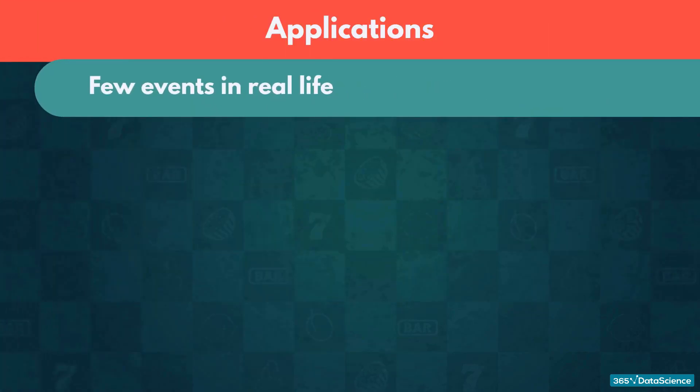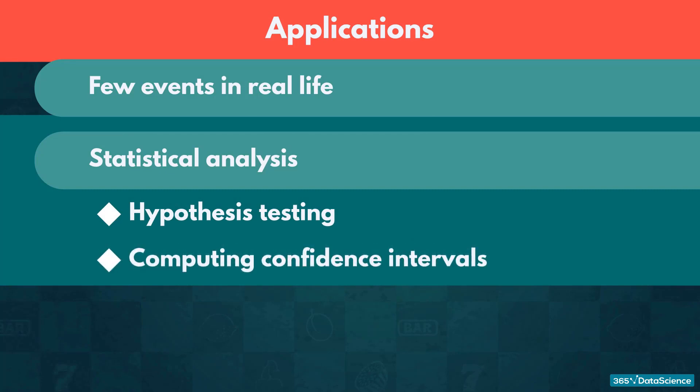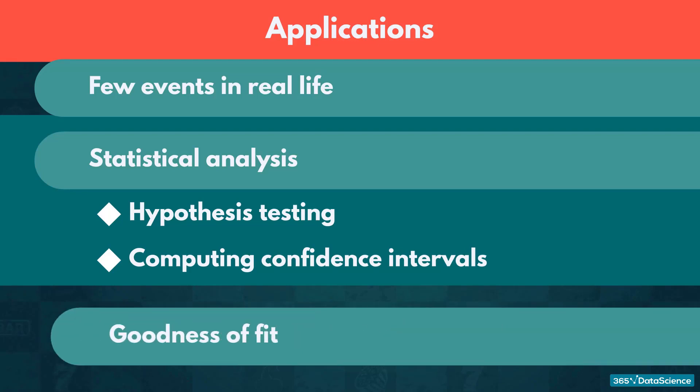Very few events in real life follow such a distribution. In fact, Chi-Squared is most featured in statistical analysis when doing hypothesis testing and computing confidence intervals. In particular, we most commonly find it when determining the goodness of fit of categorical values. That is why any example we could give you would feel extremely convoluted to anyone not familiar with statistics.